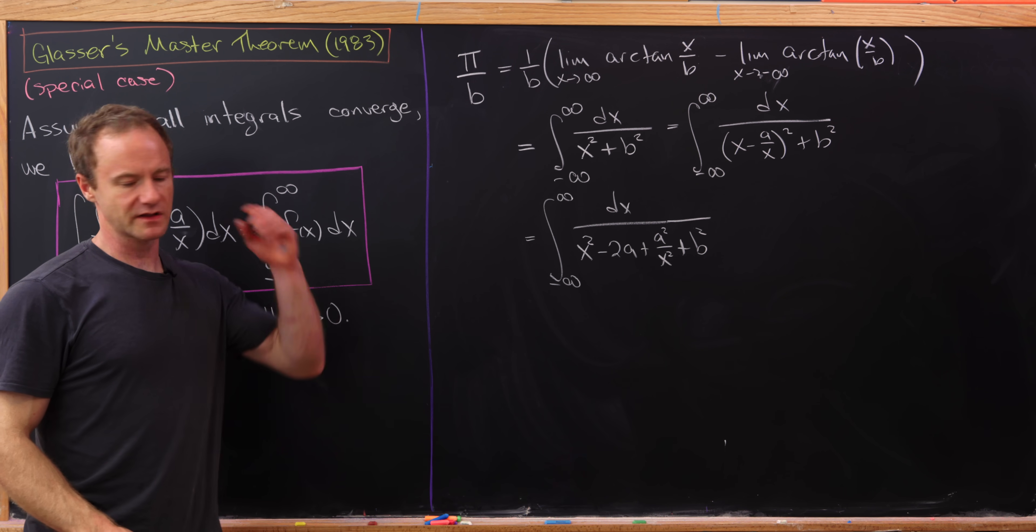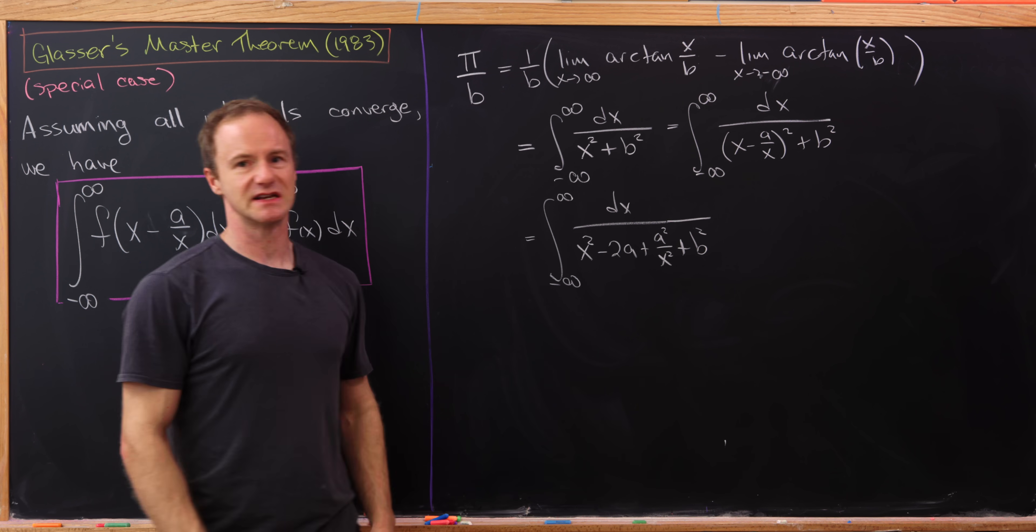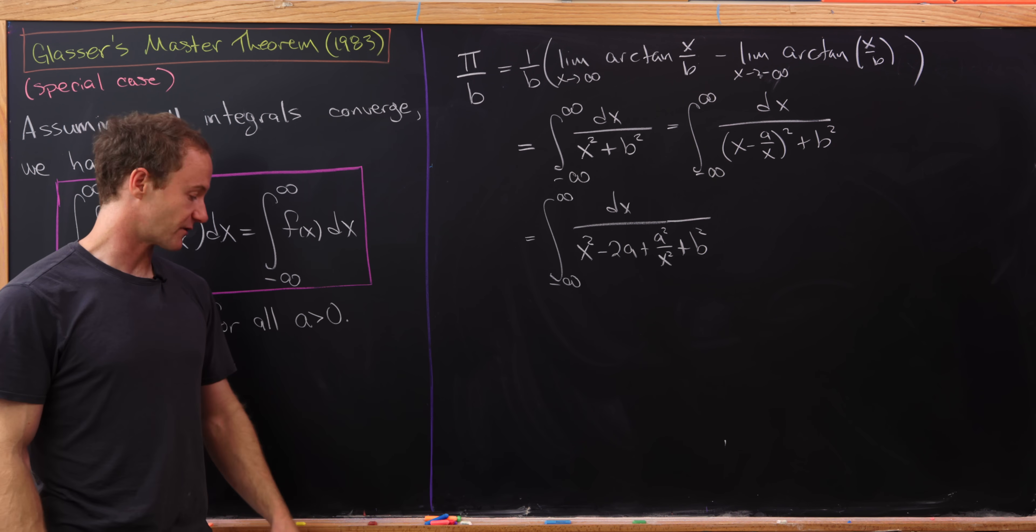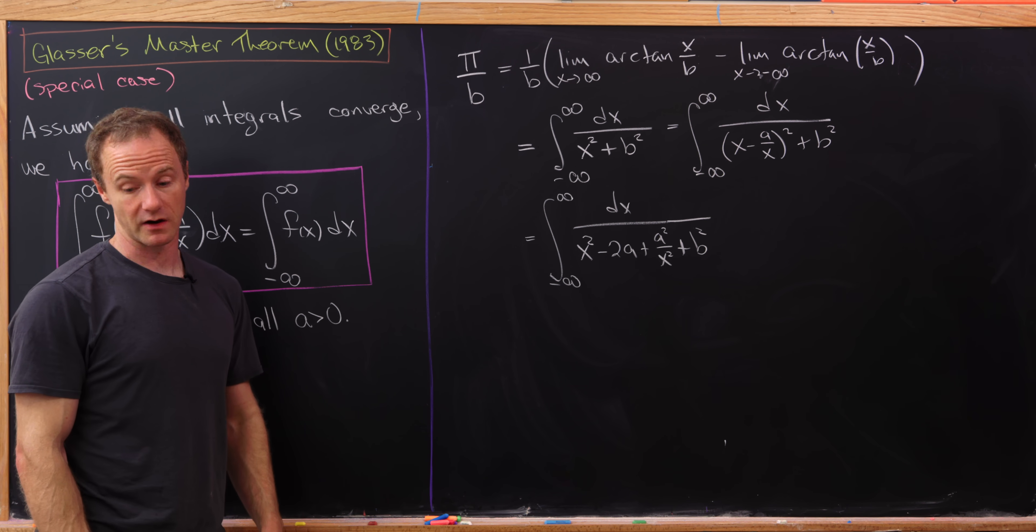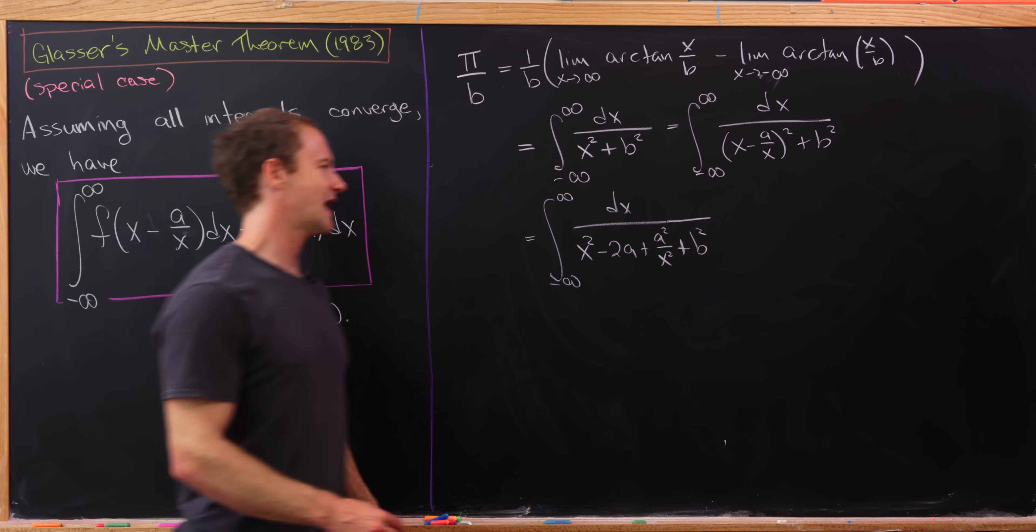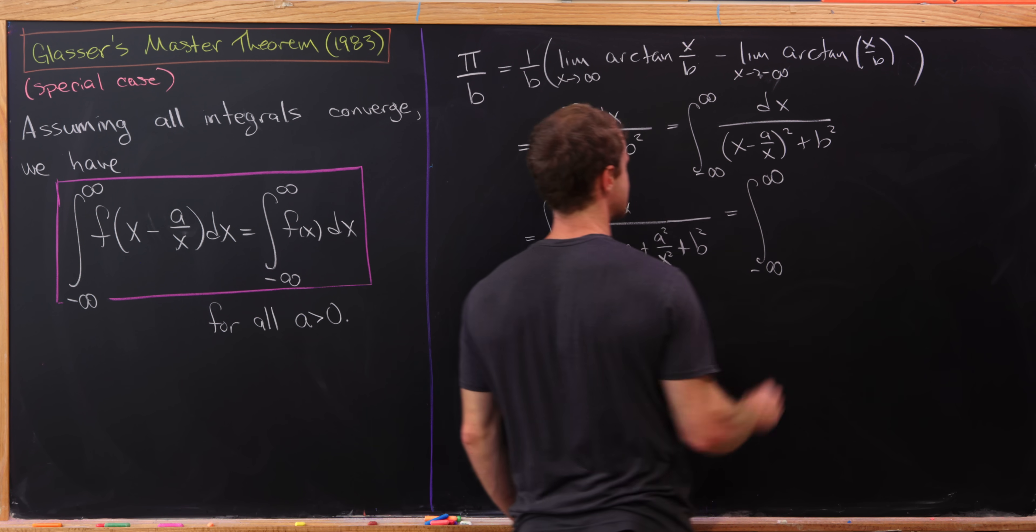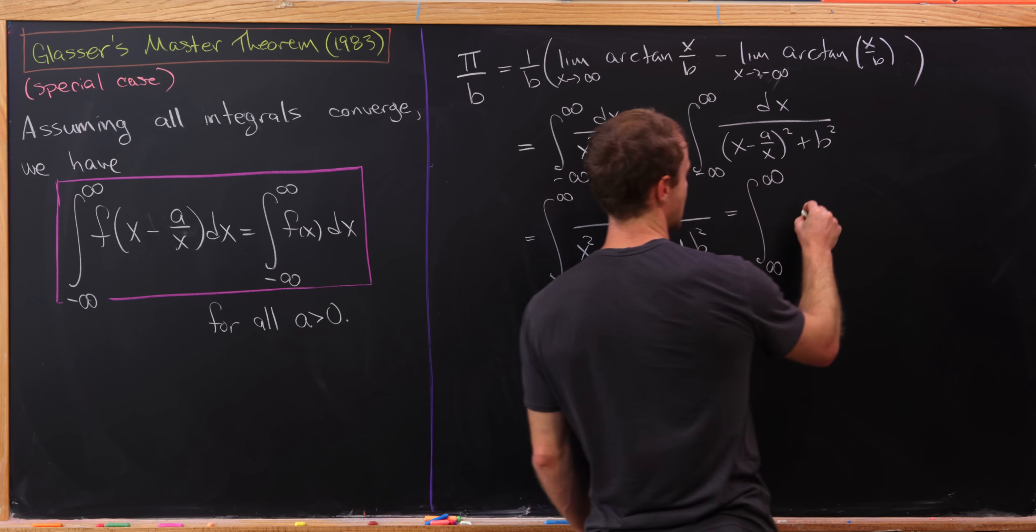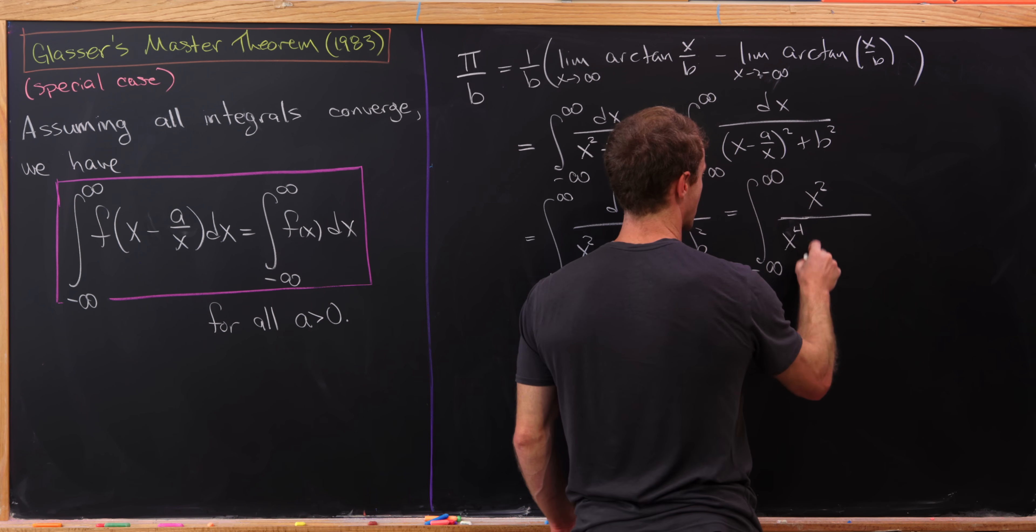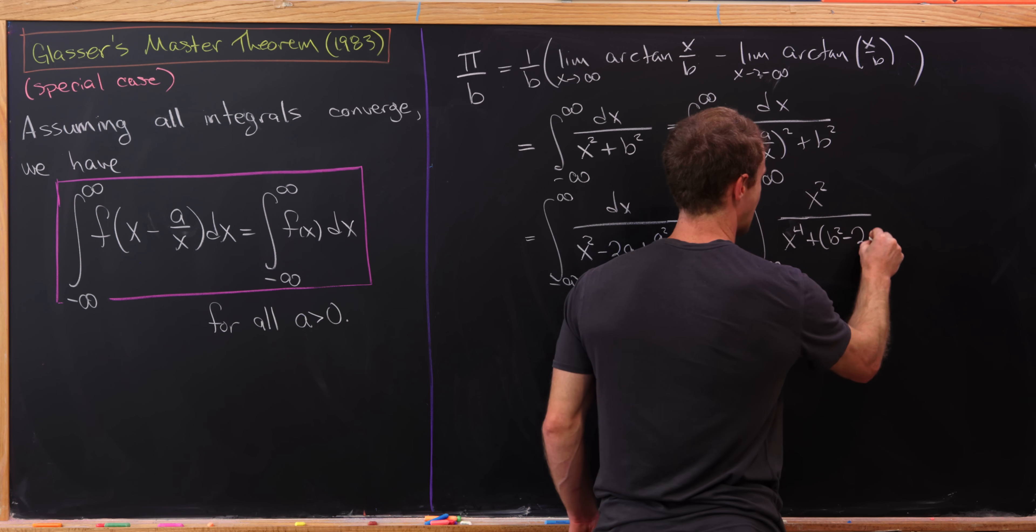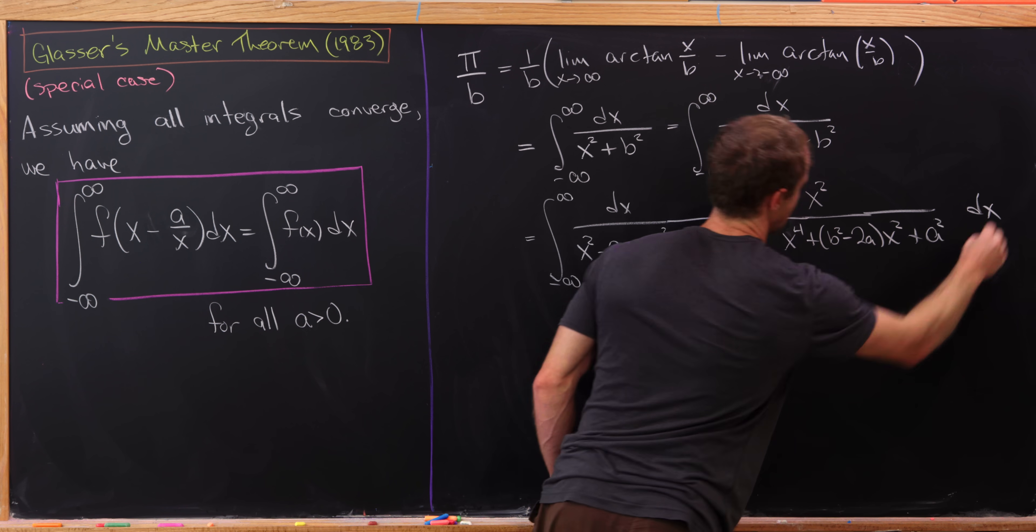But I think it's probably a little bit nicer if we were to make this denominator a little simpler, so we don't have fractions within fractions. We can do that by multiplying the numerator and the denominator by x squared. And then doing that and collecting terms will give us this: the integral from minus infinity up to infinity of x squared over x to the fourth power plus b squared minus 2a times x squared plus a squared dx.